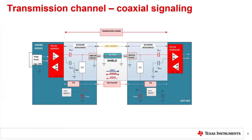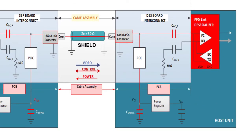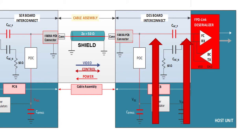In this example I'm showing a single-ended transmission channel consisting of the serializer PCB with its onboard components, a coaxial cable assembly, and the deserializer PCB with its onboard components. When power over coax, also called POC, is used to carry power across the link, the POC inductors on the serializer side as well as the deserializer side should be included as part of the transmission channel. The signal path consists of the PCB single-ended trace, the AC coupling capacitor, a shunting POC inductor to a virtual ground, and a single-ended connector that connects the PCB to the coaxial cable.